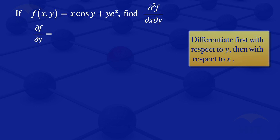What we'll do is look at this part here and differentiate it with respect to y, treating x as if it's a constant, to give us x multiplied by the derivative of cosine y with respect to y. The derivative of cosine gives us a minus, so we have minus x sine y. Then we differentiate the second term with respect to y, treating x as if it's a constant. Since we just differentiate y it gives us 1, multiplied by the exponent of x, which acts as a constant.